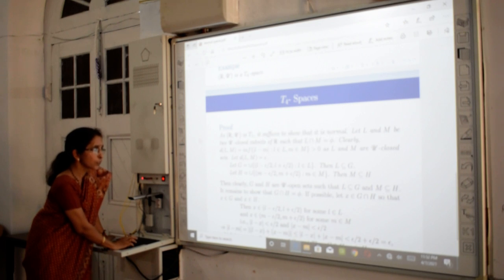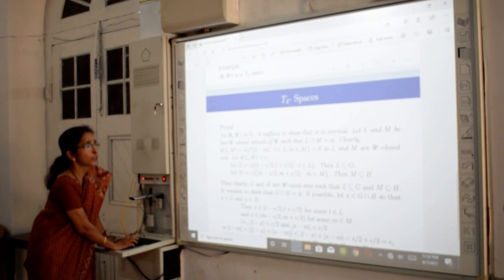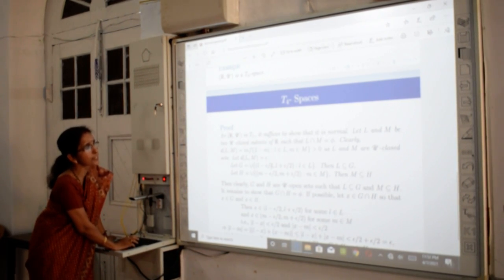Since we know that open intervals in R with usual topology are open sets, and union of open sets is open, we can conclude that G and H are open sets.